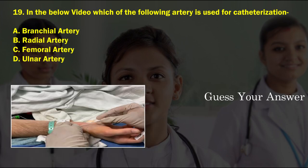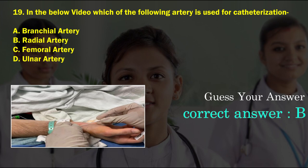In the below image, which of the following arteries is used for catheterization? Option A: brachial artery, option B: radial artery, option C: femoral artery, option D: ulnar artery. The correct answer is option B, radial artery.